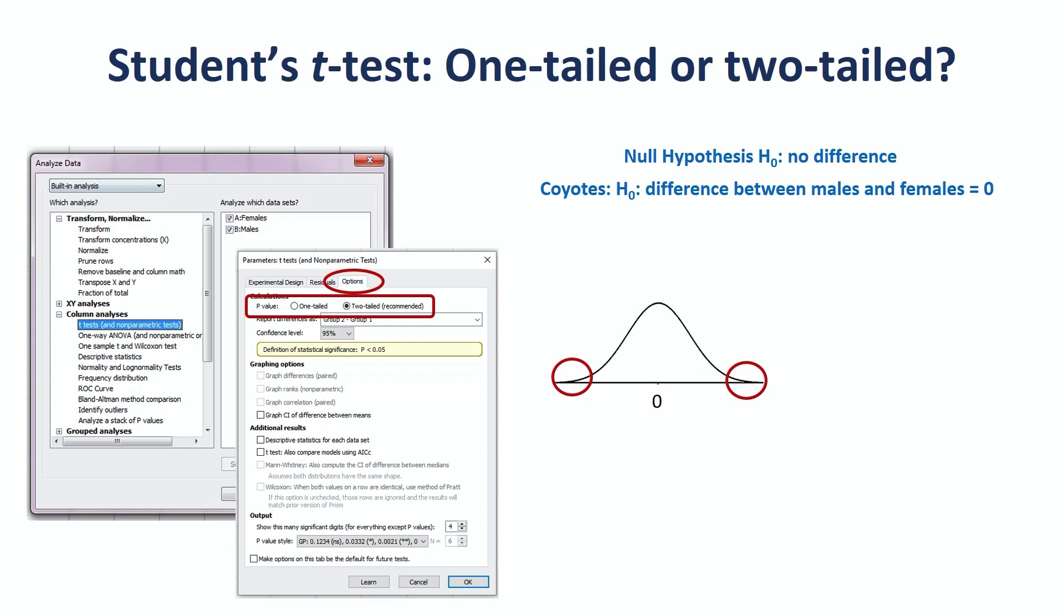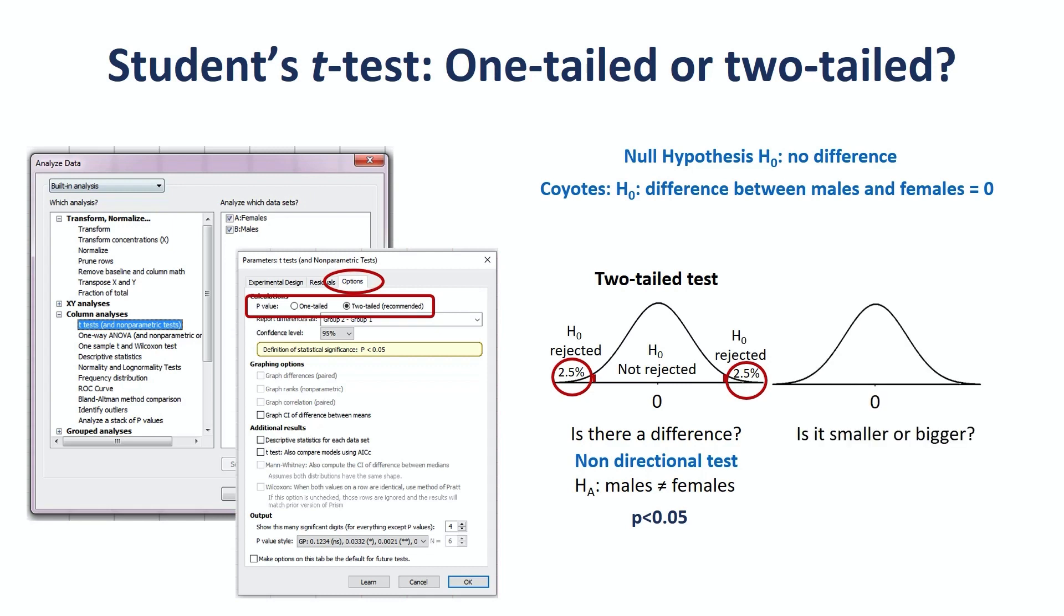It is really about the question we are asking. If we ask, is there a difference? That difference can be positive or negative. And the 5% area, as in p-value below that 0.05, is split into two areas, which each represents 2.5% of the values. If we ask a question like, is it smaller than or bigger than, then the significant area is all on one side, hence one tail. The choice between one and two tails needs to match the scientific question, so has to be made at the experimental design stage way before collecting the data. In our case, we want to know if there is a significant difference between males and females, so we go for the default two-tailed.